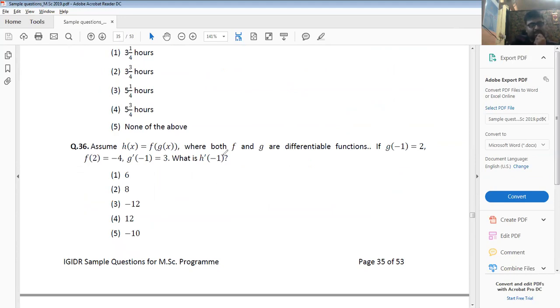Question 36: h'(-1) = f'(g(-1)) × g'(-1). f'(g(-1)), again f'(2) is what?